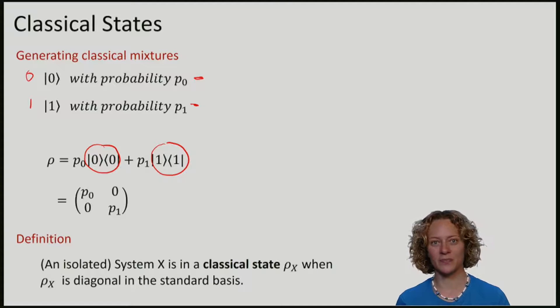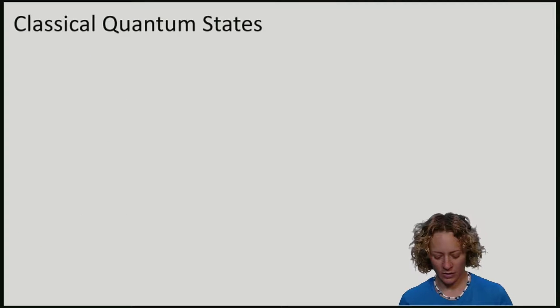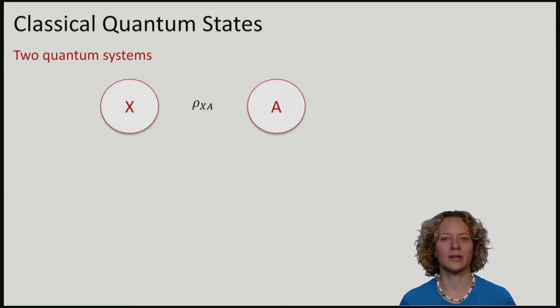Let's suppose now that we have two quantum systems. One of them I will call capital X, and the other one I will call A. It is a common convention to call classical systems X, Z, and Y,